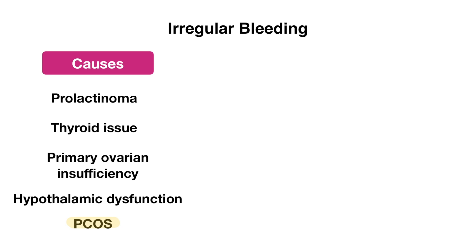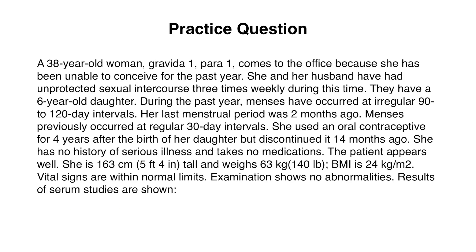Now that we've gone over causes of abnormal uterine bleeding, how to categorize and evaluate them, let's go over a practice question. Here we have a 38-year-old woman, G1P1, who comes to the office because she has been unable to conceive for the past year. She and her husband have had unprotected sexual intercourse three times weekly during this time. They have a six-year-old daughter. During the past year, menses have occurred at 90- to 120-day intervals. Her last period was two months ago. Menses previously occurred at regular 30-day intervals. She used oral contraceptives for four years after the birth of her daughter but discontinued it 14 months ago. She has no history of serious illness and takes no medications.